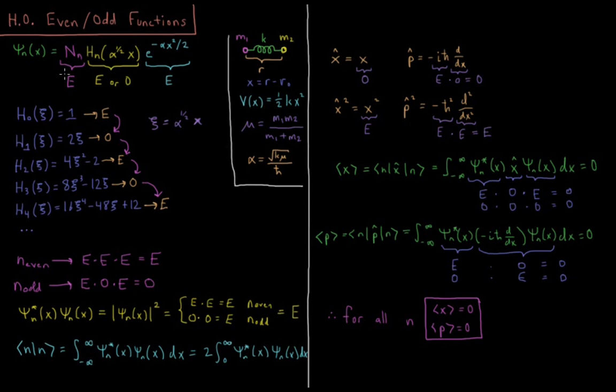So we have three components to our harmonic oscillator wave functions, as we previously saw. Normalization constant, Hermite polynomial, Gaussian function.